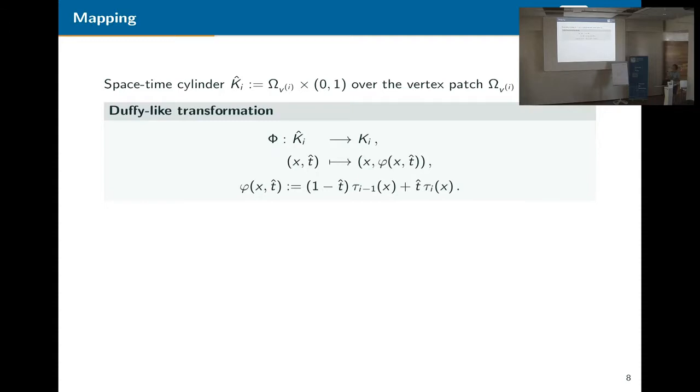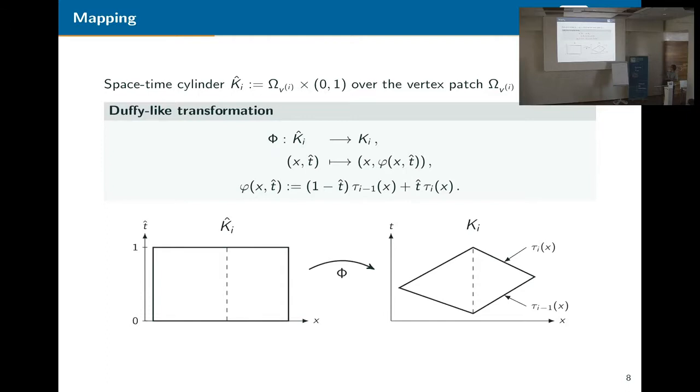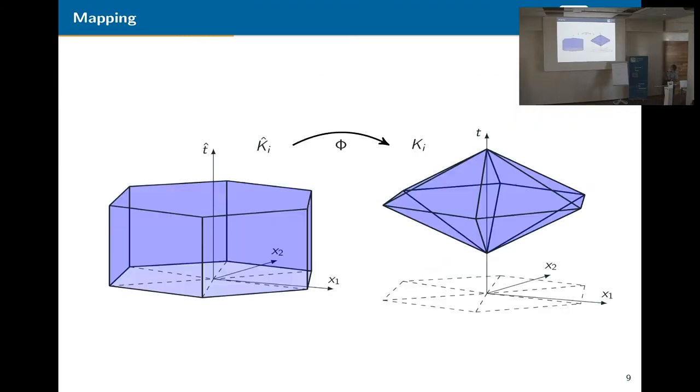So what we added is the mapping. So we apply a Duffy-like transformation to map those tents to a tensor product domain. So we leave the spatial vertex patch untouched and map it to the cylinder, which is a tensor product of the space and the time interval from 0 to 1. So we have the tent is built from the bottom advancing front and the top advancing front. And the phi describes some manifolds somewhere in the tent. And it's a linear combination just between the old and the new advancing front. Okay, in 2D looks similar. So we always solve on quite simple domains.